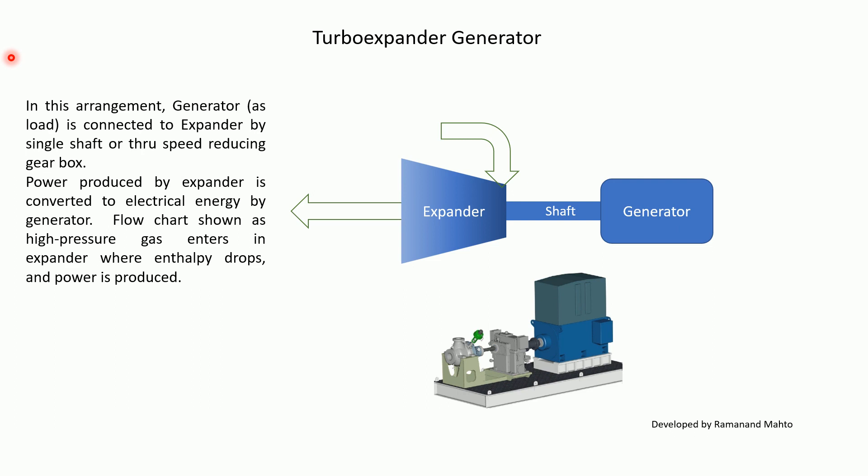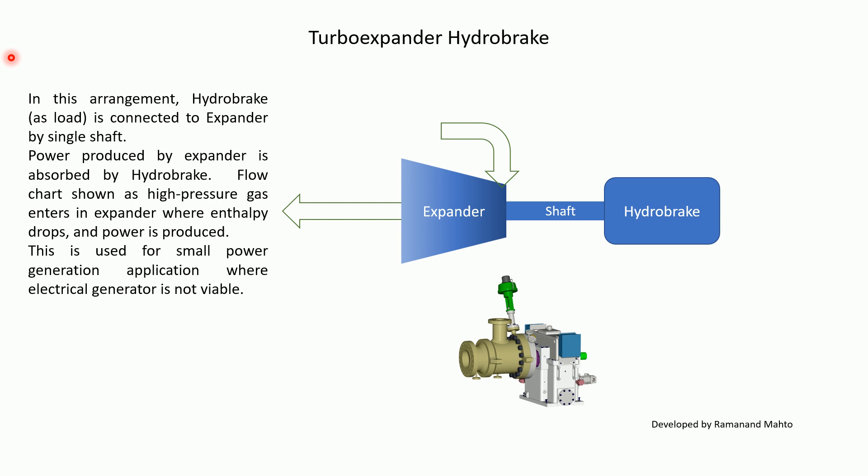In the Turbo Expander-Generator arrangement, a generator as load is connected to the expander by a single shaft or through a speed-reducing gearbox. Power produced by the expander is converted to electrical energy by the generator. In the Turbo Expander-Hydro Brake arrangement, a hydro brake as load is connected to the expander by a single shaft; power produced by the expander is absorbed by the hydro brake. This is used for small power generation applications where an electrical generator is not a viable solution.